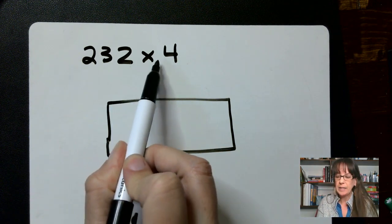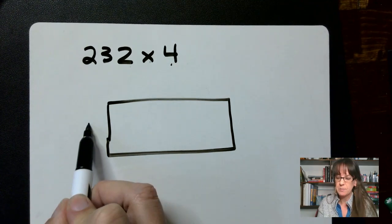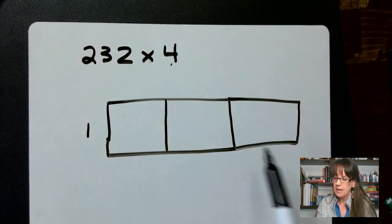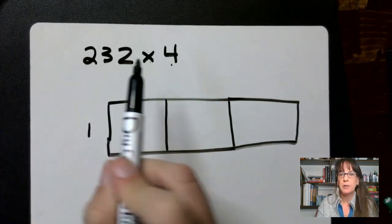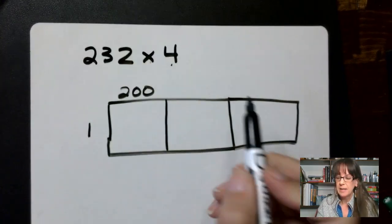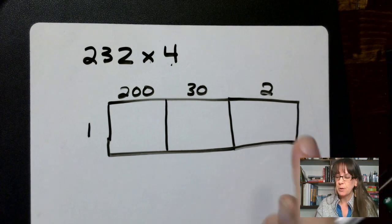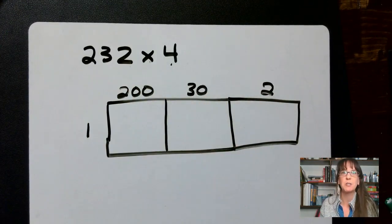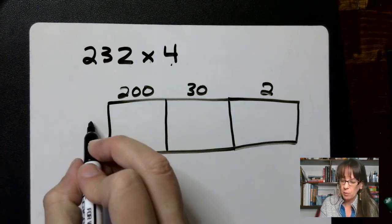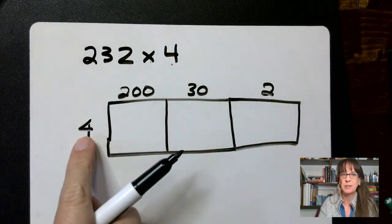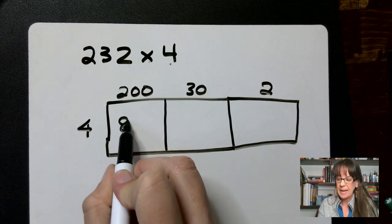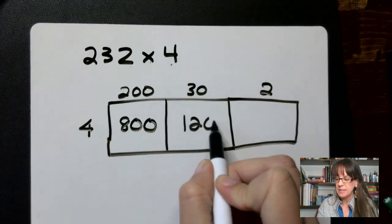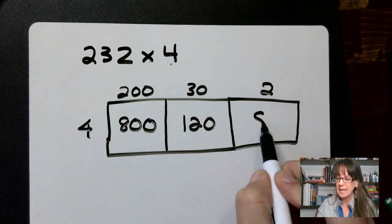Let's say that I have 232 times 4. This is a 3 by 1 box. I have to divide it into 3 sections. For my 3 sections, I've got 200s, 30s, and 2s — so my 1s here, my 10s here, my 100s here. 232 adds up to 232. Times 4. So this 4 times 2 is 8 with two zeros — that's 800. 4 times 3 is 12 with a zero — that's 120. And 4 times 2 is 8.